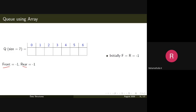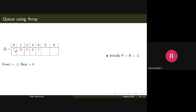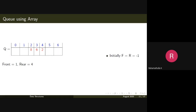We have two pointers — front and rear — both pointing to minus one in the beginning. So there are no elements and the queue is empty. The queue empty condition is clear: if both front and rear are pointing to minus one, the queue is empty. Initially, front equals rear equals minus one. Now say we insert elements: seven, fifteen, eight, six, and two — rear is now pointing to position four.